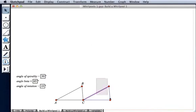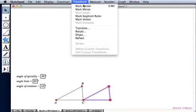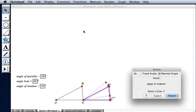Now I'll take my triangle, go back to Transform, and choose Rotate. And I will rotate it by 10 degrees about the center of point C.